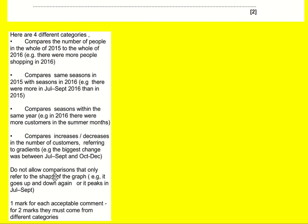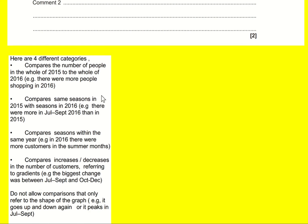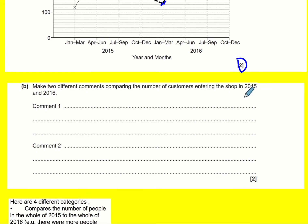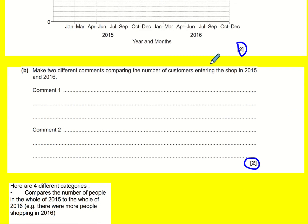You shouldn't just talk about the shape of the graph. You get one mark for each acceptable comment, but you need different categories — you can't just say there are more people in 2016 in July to September and also in October to December; you need more variance than that. Choose from those four categories to get the two marks.